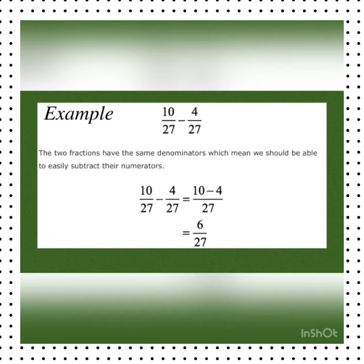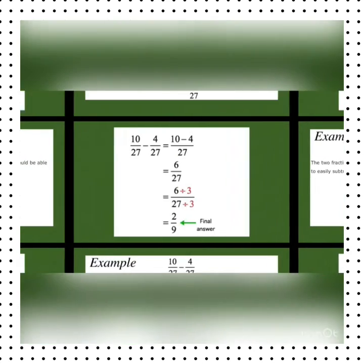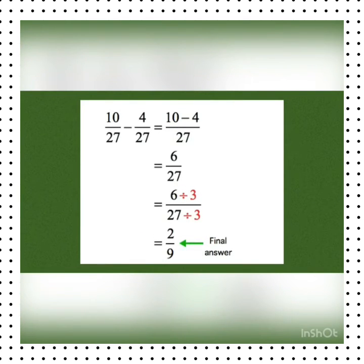Here we have to subtract 4 by 27 from 10 by 27. After solving we will get 6 by 27, but it is not our final answer. We have to reduce it again in simplest form.